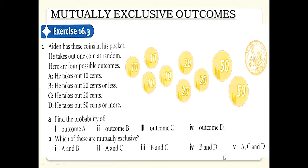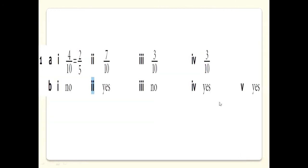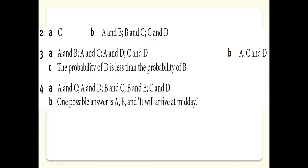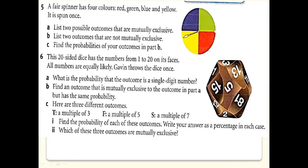For A, C, and D together: 10 cents, 20 cents, and 50 cents or more — all are different from each other, so they are mutually exclusive. The summary of answers is: A&B — no, A&C — yes, B&C — no, B&D — yes, A&C&D — yes. You can write this answer down. Now let's move on to question number six, the last question of exercise 16.3.